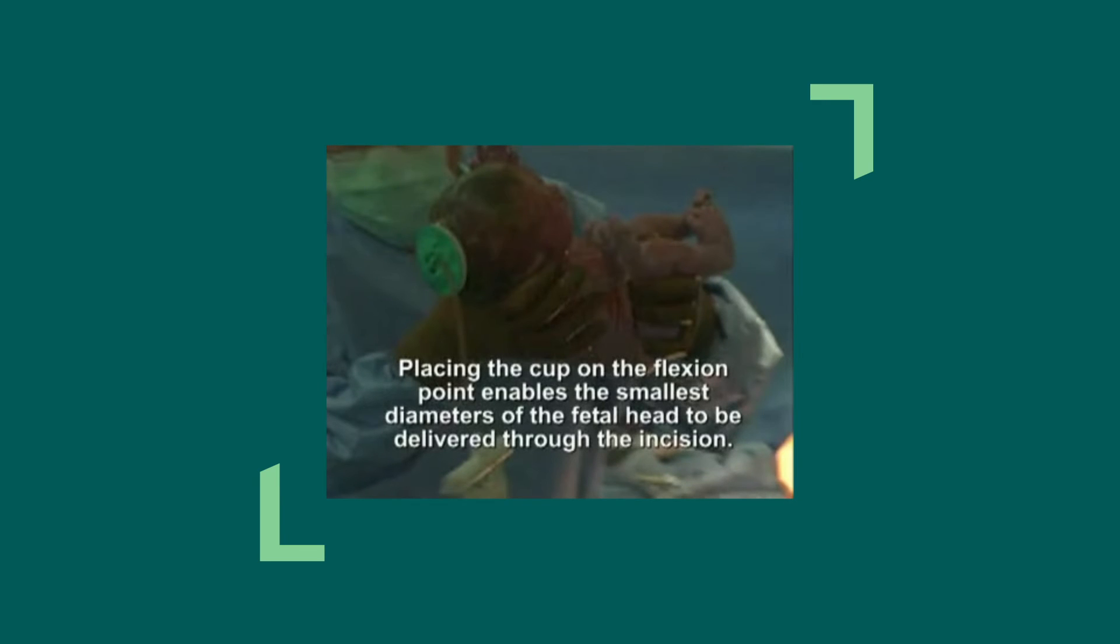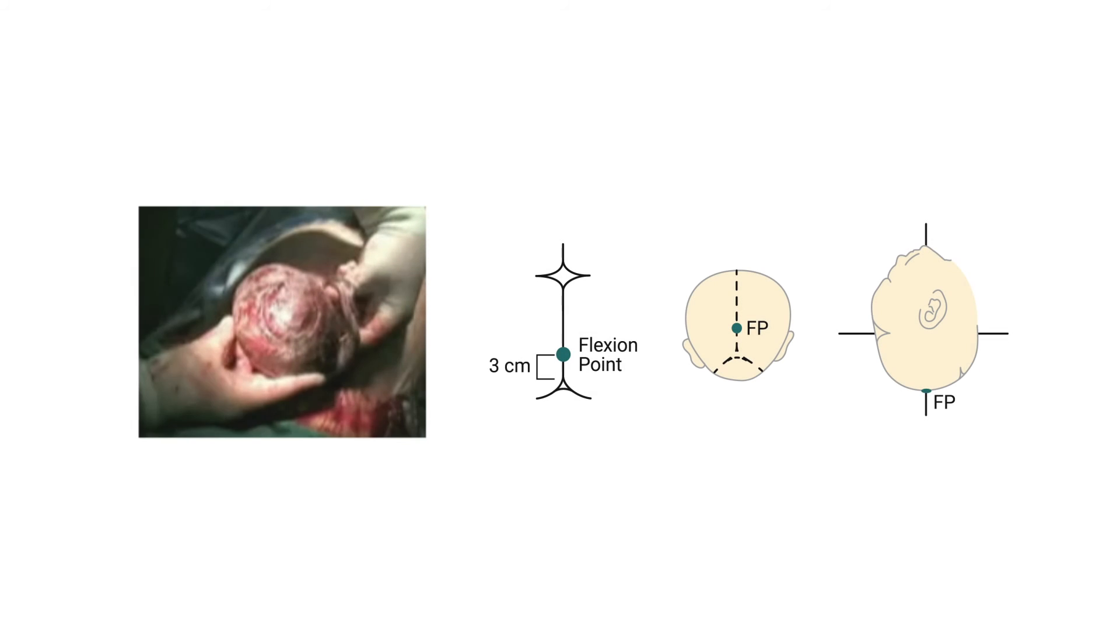In this procedure, it is evident that the Kiwi Omni-C cup was placed on the flexion point 3 cm anterior to the posterior fontanelle along the sagittal suture. Placing the cup on the flexion point enables the smallest diameters of the fetal head to be delivered through the incision.